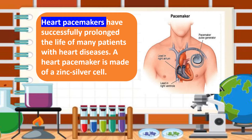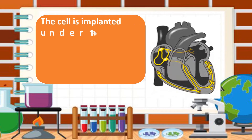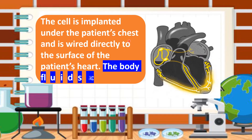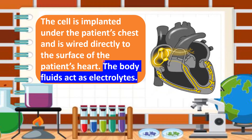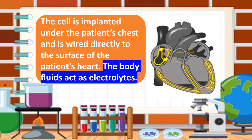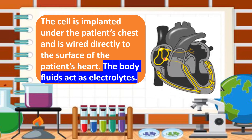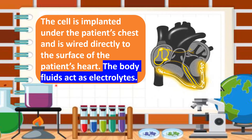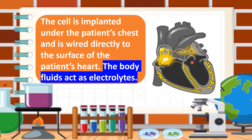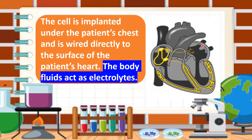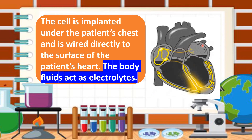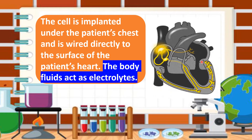But it's quite expensive. The cell is implanted under the patient's chest and is wired directly to the surface of the patient's heart. The body fluids act as the electrolytes. We put the pacemaker in the chest, and then the fluid will act as the electrolyte, so the heart is going to function and pump blood for it to circulate in our body. Please take good care of your heart because it is a very important organ in our life.